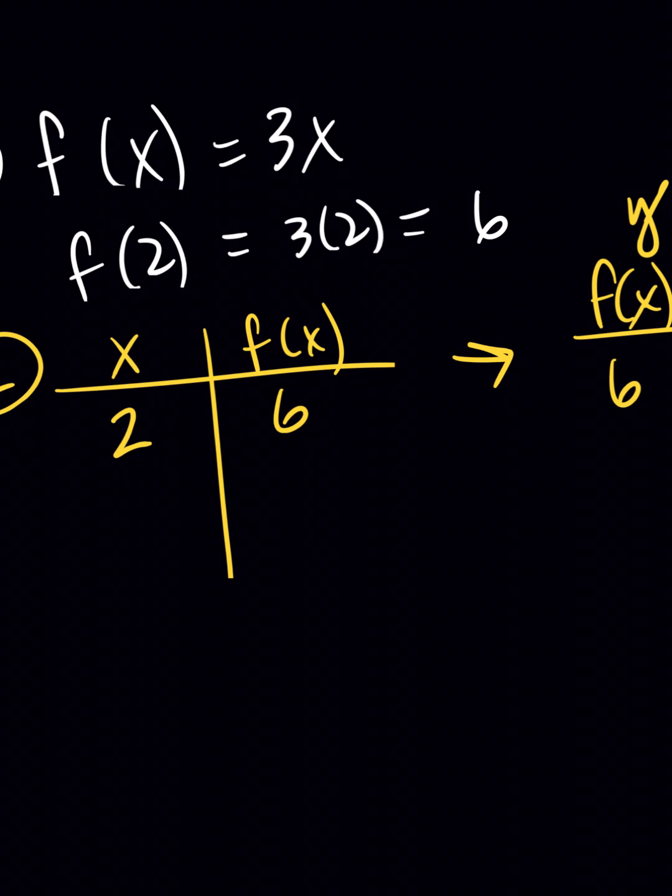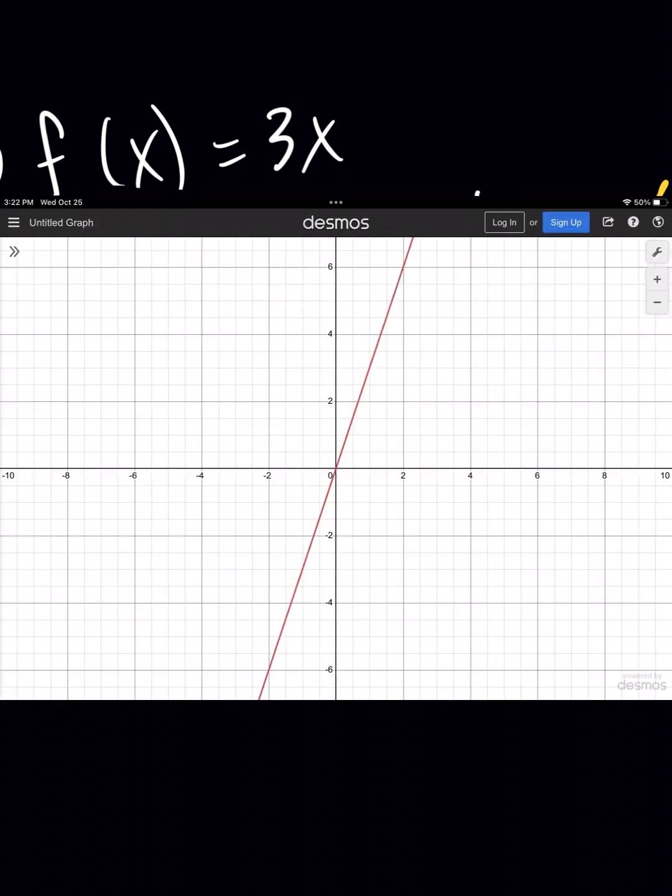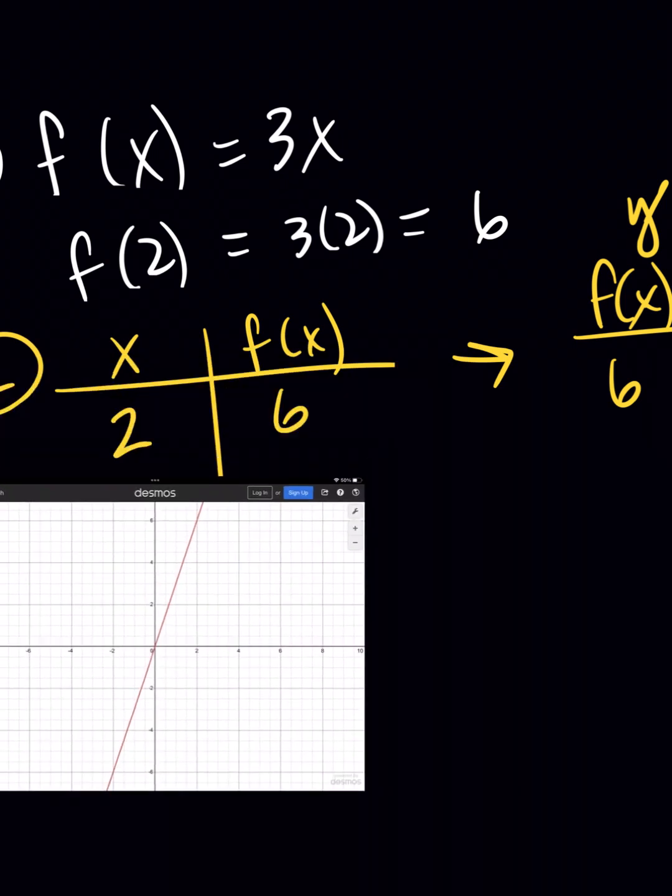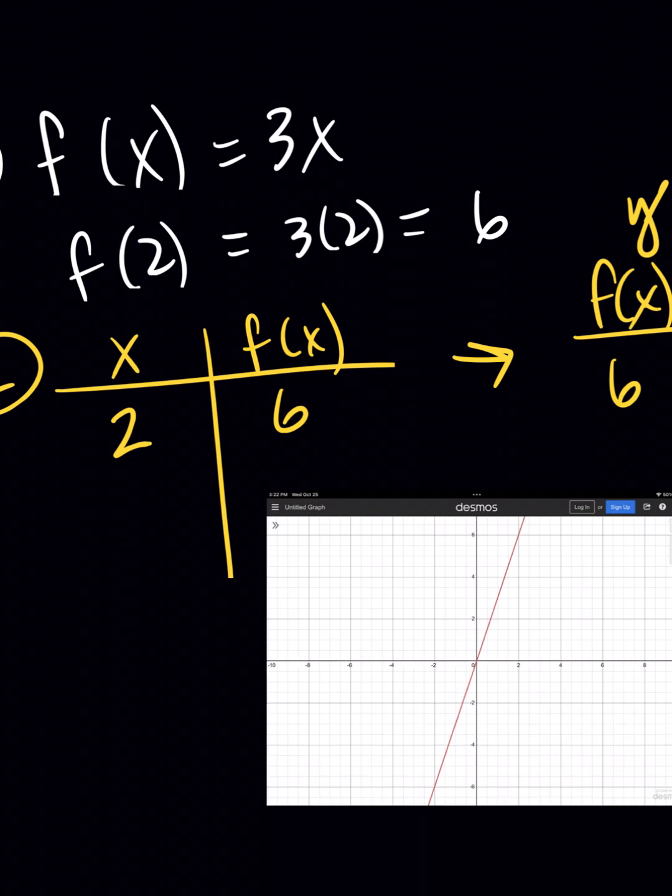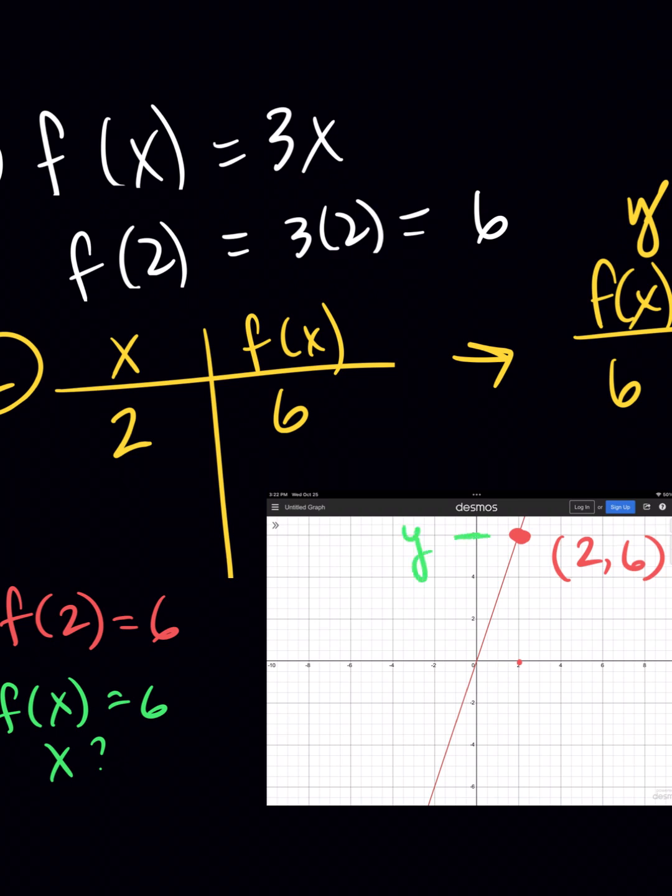And then the last way, we could have that graph. So if I grab my graph. Let's shrink that guy down. The last thing we could do is we could have our graph. And I could find f of 2 by looking at the 2 on my graph and finding the ordered pair that goes. So that's 2, 6. So that would be 6. Or I could go the opposite way and I could say, well, if f of x is 6, what is x? So then I would go over here and look at the y value, go to that same point. I would know the 6 and I would be plugging in x equals 2.